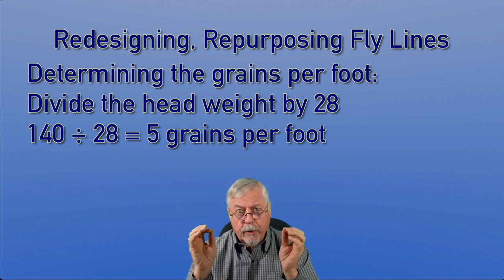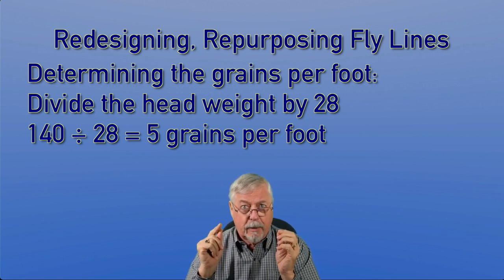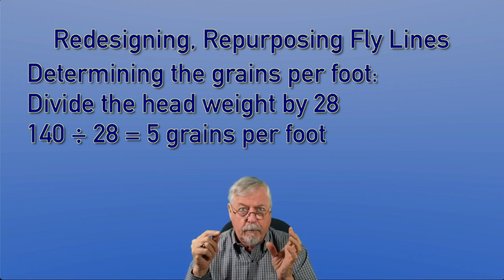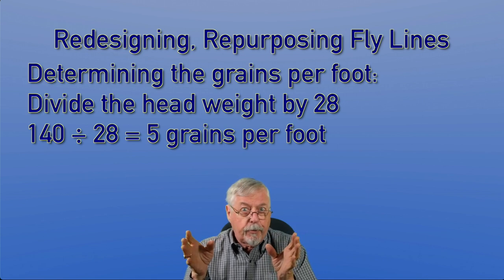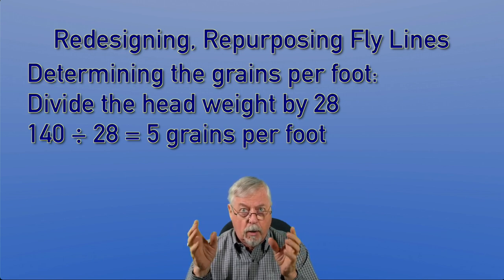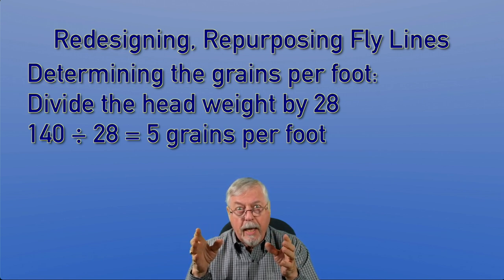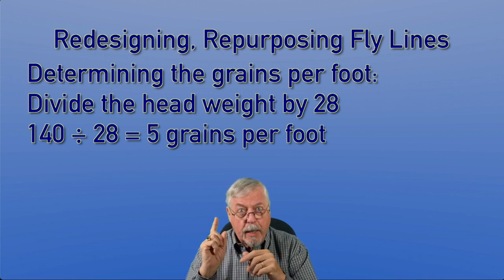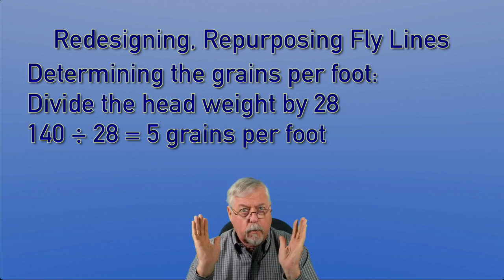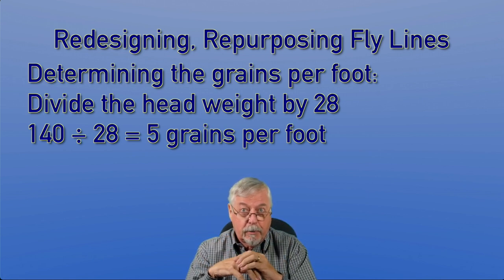Now we're after the grains per foot, because once we know the grains per foot, we know how much to cut off. We have to reduce this to grains per foot. We take the grain weight for the first 30 feet of the line — in this case it's 140 grains, which is the AFTMA standard for a five-weight line. So we divide 140 by 28 — our level line equivalent — which gives us five grains per foot. You can do this in metric too: grams and meters works just fine as long as you have the information.